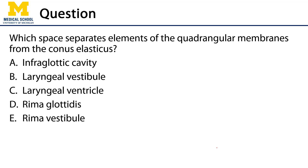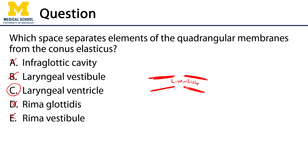The assessment question for this video: which space separates elements of the quadrangular membranes from the conus elasticus? The options are the infraglottic cavity, the laryngeal vestibule, the laryngeal ventricle, the rima glottidis, or the rima vestibule. The answer is the laryngeal ventricle. Recall that the inferior-most parts of the quadrangular membranes are the vestibular ligaments, the superior-most folds of the conus elasticus are the vocal ligaments, and the space between them is the laryngeal ventricle.